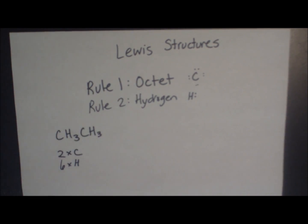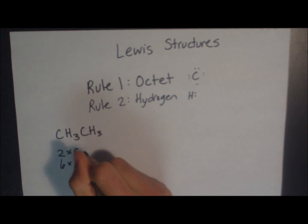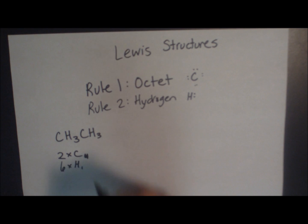Carbon is a group four element, which means it has four valence electrons, while hydrogen is a group one element, which means it has one valence electron. So, if there are two carbons, it'll be eight electrons. If there are six hydrogens, that'll be six, giving a total of 14 total electrons.